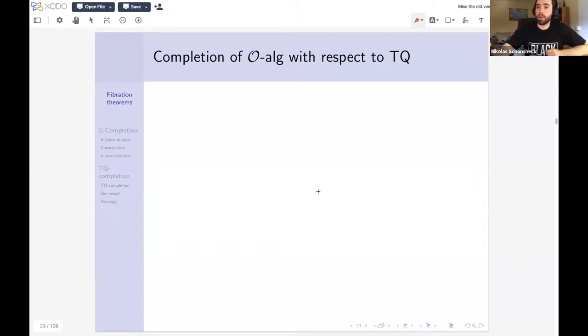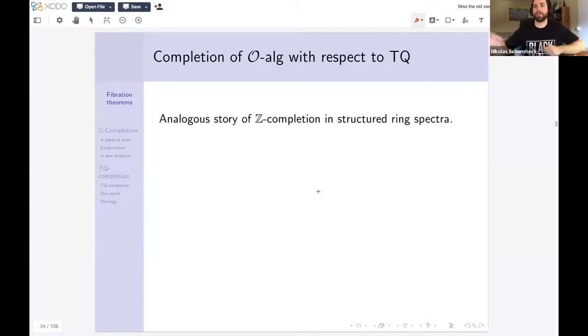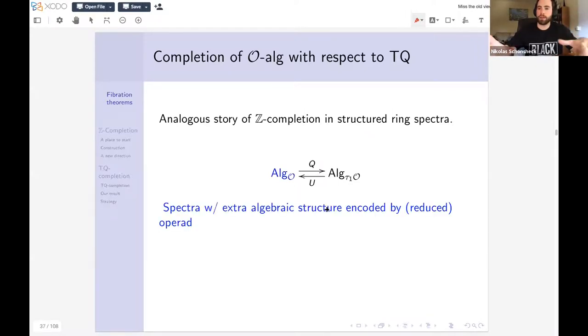So now I want to, that's sort of the classical story. And now I want to sort of retell this story in a newer context of structured ring spectra. So I'm going to talk about completion of O algebras with respect to TQ homology. So this is very much in the same vein of Duncan's talk. But the thing to keep in mind is this is an analogous story of z-completion in structured ring spectra. If you're not familiar with spectra, hopefully Duncan's talk enlightened that some. But you can just think of spectra as sort of a better version of spaces. Like the theory of spectra encompasses the theory of spaces, but they can have much richer algebraic structure on them.